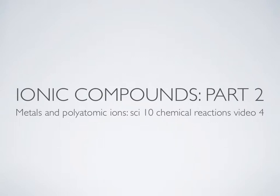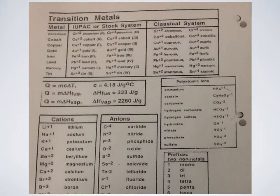Ionic Compounds Part 2: Metals and Polyatomic Ions. This is Science 10 Chemical Reactions Video 4. You can find your polyatomic ions on your handout sheet and they're right here.